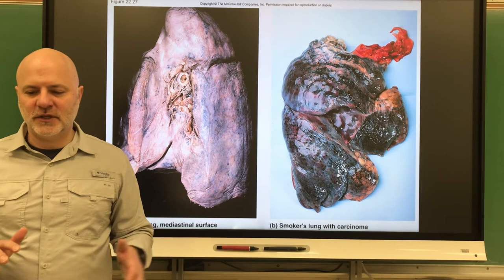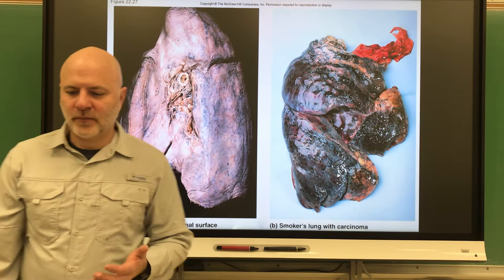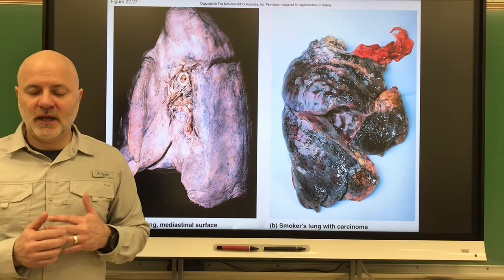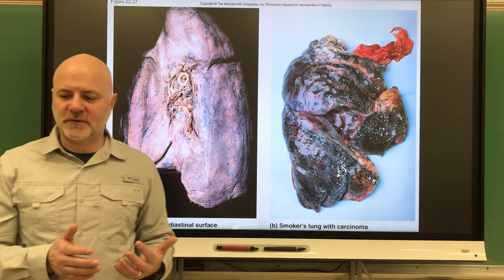There are three types here. There is squamous cell carcinoma, which starts in the basal cells of the bronchial epithelium. Here the pseudostratified ciliated columnar epithelial cells become stratified squamous epithelium, and they're going to invade underlying tissues. This is going to replace functional respiratory tissue with bleeding lesions.